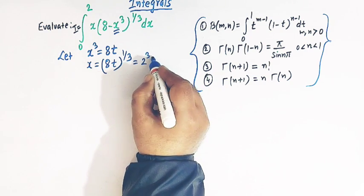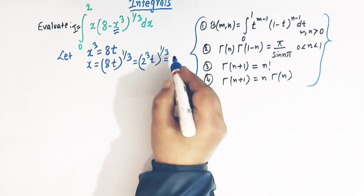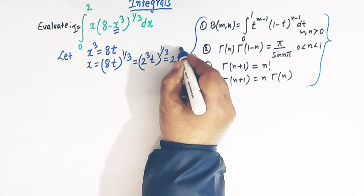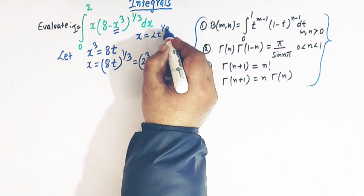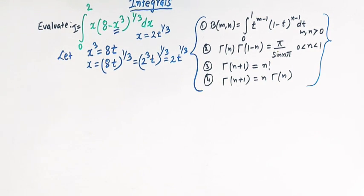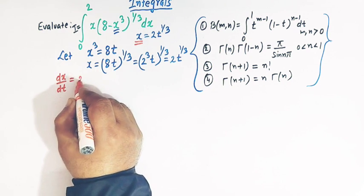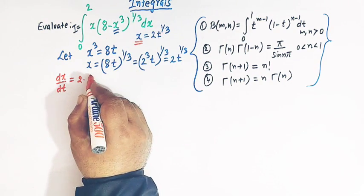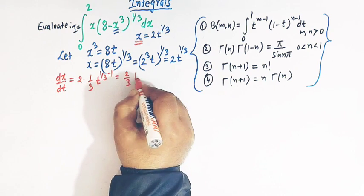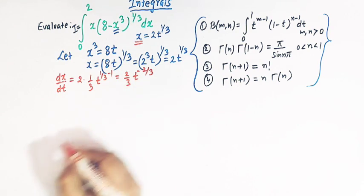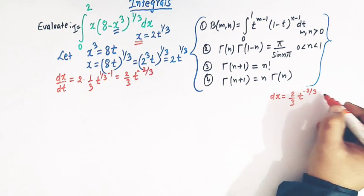Now 8 can be written as 2³, so (8t)^(1/3) simplifies to 2t^(1/3), since the cube and 1/3 cancel. So x equals 2t raised to 1 over 3. Differentiating with respect to t, dx/dt equals 2 times (1/3) t raised to (1/3 minus 1), which is 2/3. So dx equals (2/3) t raised to minus 2/3 dt.